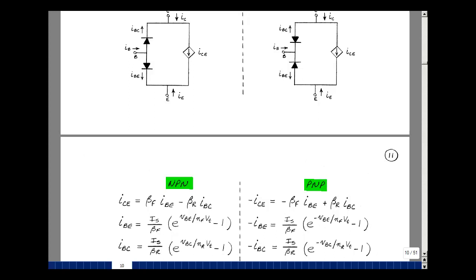Also, if you sum the currents at the nodes, in other words, I sub C, I sub B, and I sub E, you can show that this model is exactly the same as the Ebers-Moll model, and that's one of the supplemental problems.